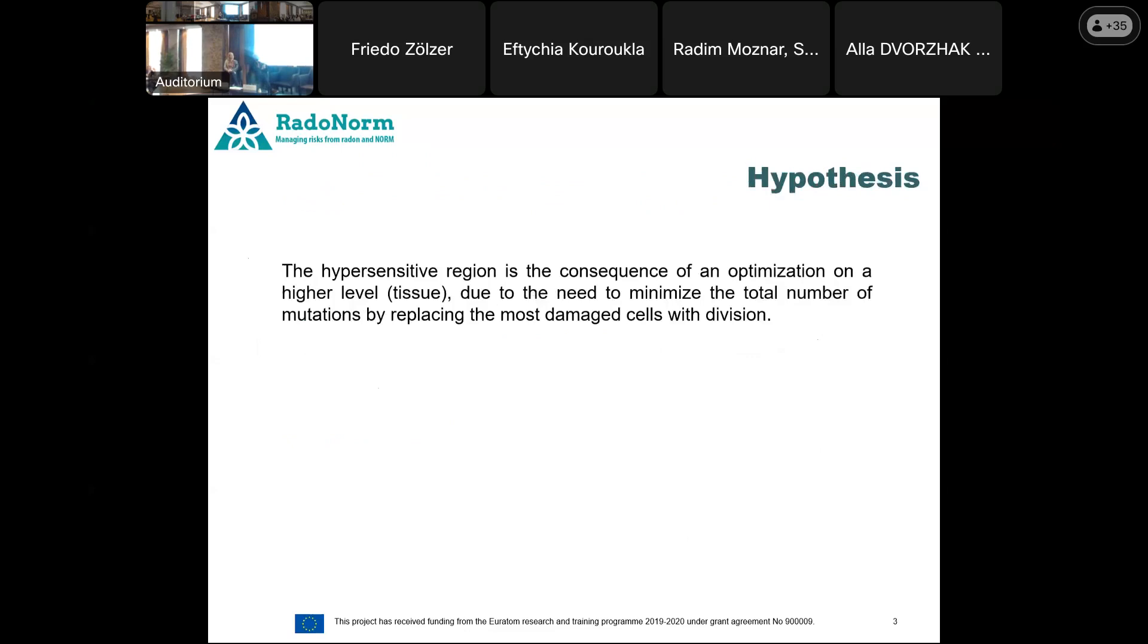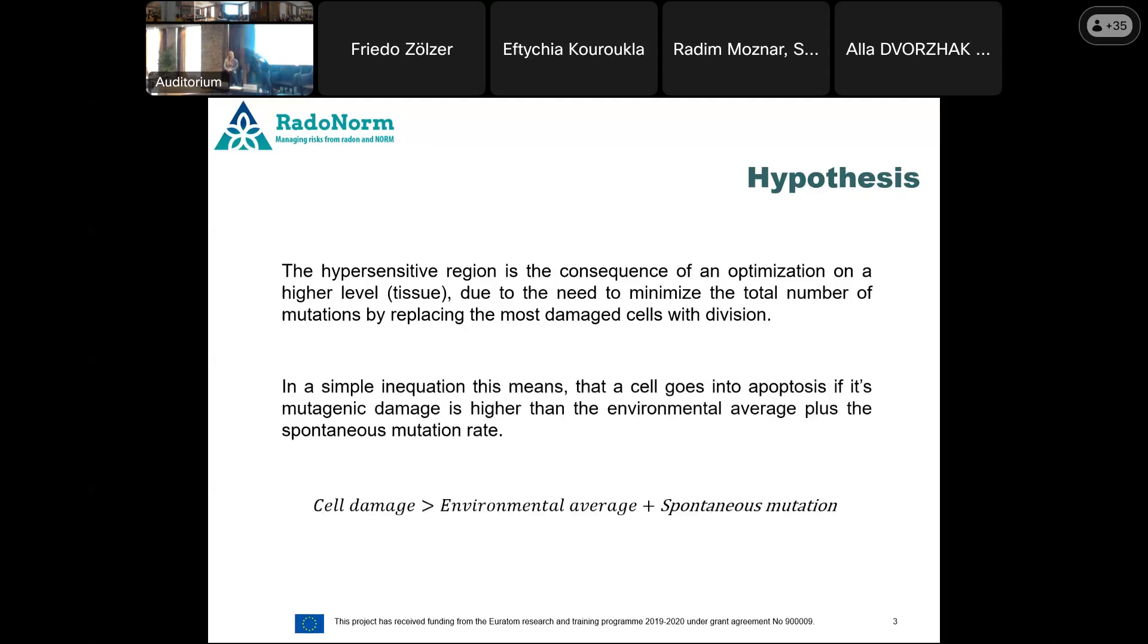Our hypothesis is why this actually occurs is that this hyper-radiosensitive region is a consequence of an optimization at the tissue level that wants to minimize the total number of mutations by replacing the most damaged cells through division, of course. In an equation, it means that the cells die if they have a higher mutagenic damage than the average damage of their environment. They also take into account that division also causes mutations. And we call this the spontaneous mutation.